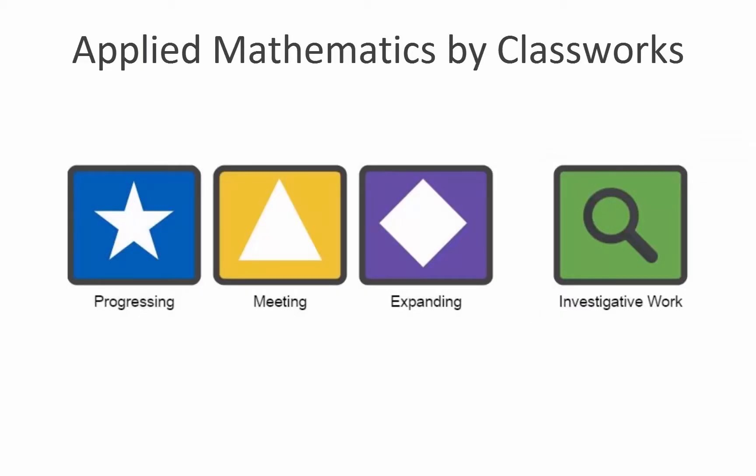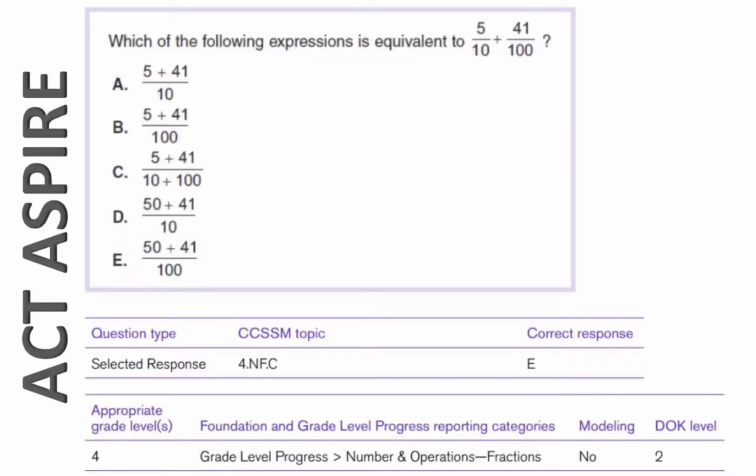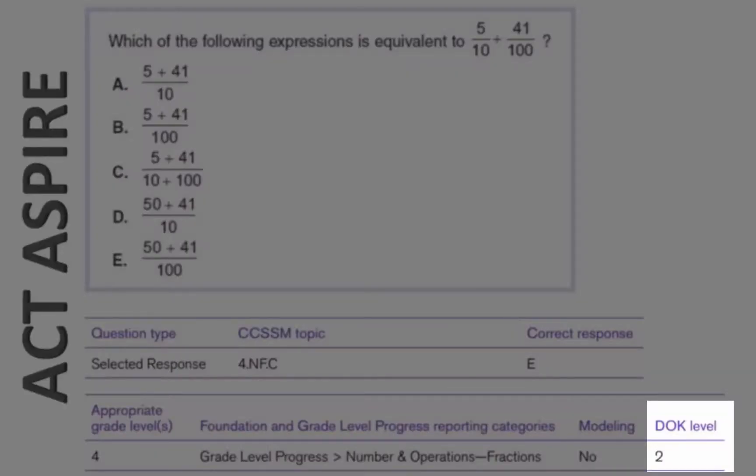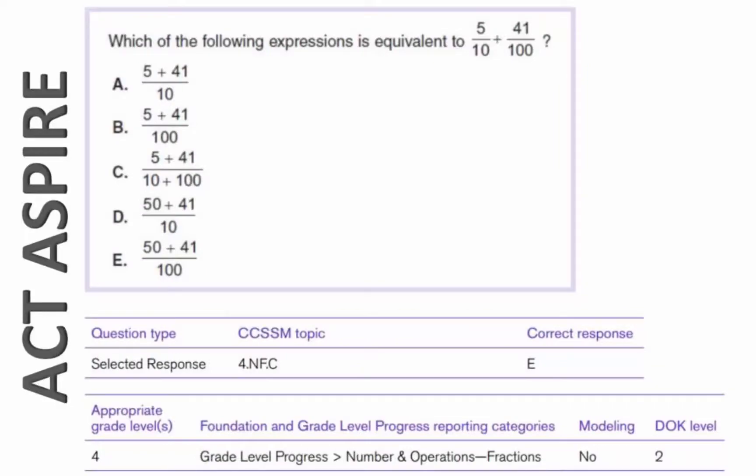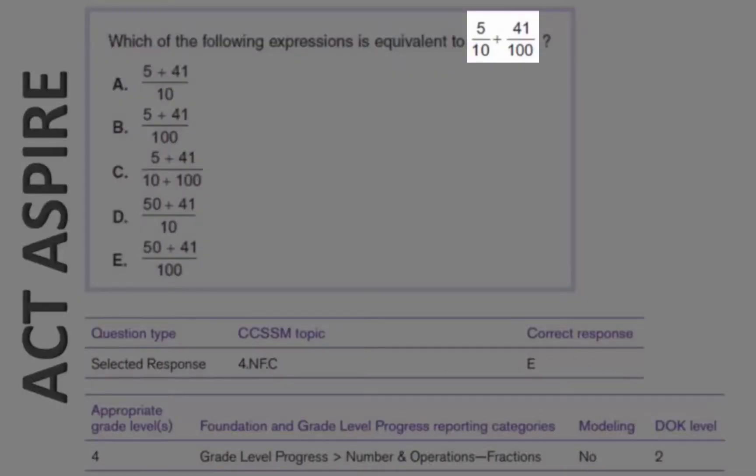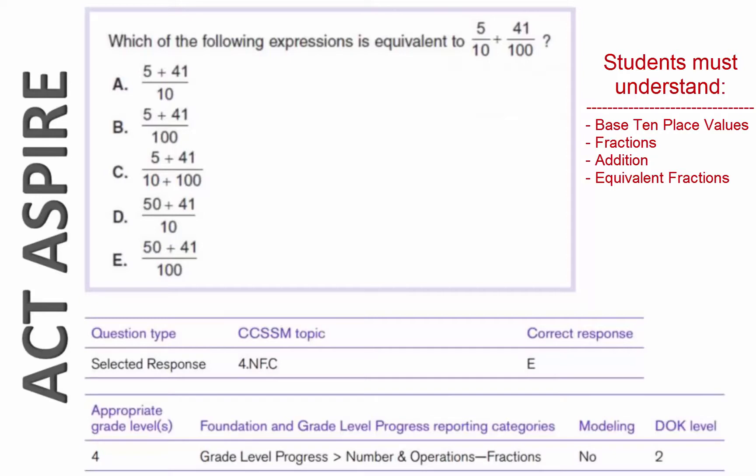Let's take a look at some sample problems. Here we have a sample 4th grade ACT Aspire math problem. We know that it has a depth of knowledge level of 2, it assesses the student's ability to add fractions with unlike denominators, and it requires multiple steps to solve.